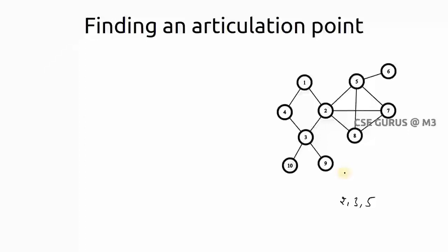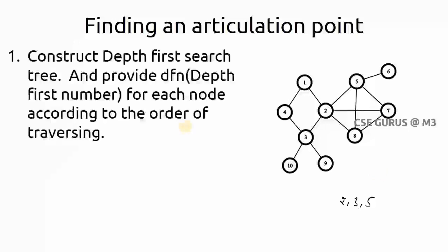Using the procedure, we should get the same answer: vertices 2, 3, and 5 as articulation points, matching what we found manually. The first step is: construct the Depth First Search tree and provide a DFN (depth first number) for each node according to the order of traversal. Let's see how to construct this.